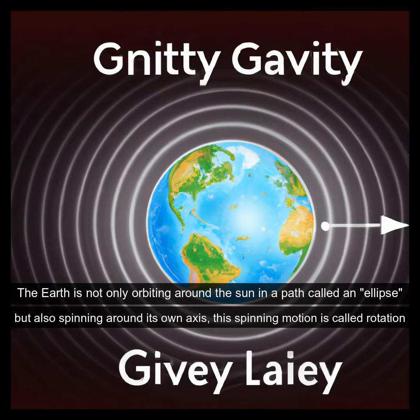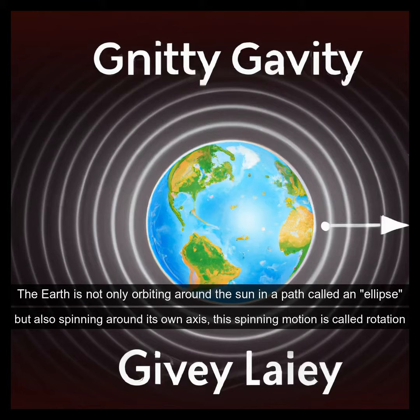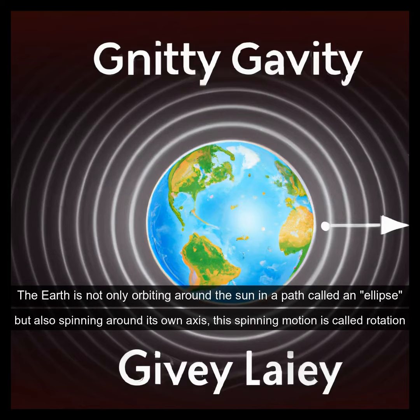The earth is not only orbiting around the sun in a path called an ellipse, but also spinning around its own axis. This spinning motion is called rotation.